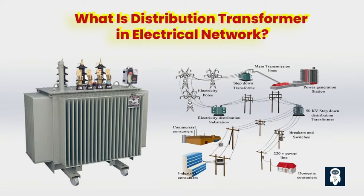Unlike distribution feeder lines, which connect multiple facilities or buildings, distribution transformers are designed to connect to a single building or a set of buildings. They supply power to a specific area or a localized network of consumers, ensuring that electricity is distributed evenly and reliably. In terms of structure, a distribution transformer shares similarities with an auto transformer — both consist of windings and a core — with windings connected to supply current to both sides of the load, allowing for efficient voltage reduction and distribution.